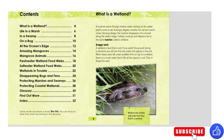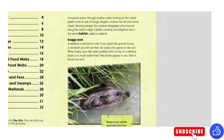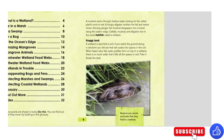A muskrat swims through shallow water, looking for the cattail plant's roots to eat. A hungry alligator swishes her tail and swims closer. Sensing danger, the muskrat disappears into a tunnel along the water's edge. Cattails, muskrat, and alligators live in the same habitat, called a wetland.